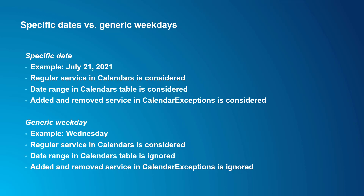When you do an analysis with a specific date, the regular weekday service in Calendars is considered. The start and end dates in Calendars are also considered, so if your date falls outside of that range, the service won't be included. Additionally, service that's added or subtracted for the date in Calendar Exceptions will be considered. When you do an analysis for a generic weekday, only the regular weekday service defined in Calendars is considered. The date ranges in Calendars and the added and subtracted service in Calendar Exceptions will be ignored.